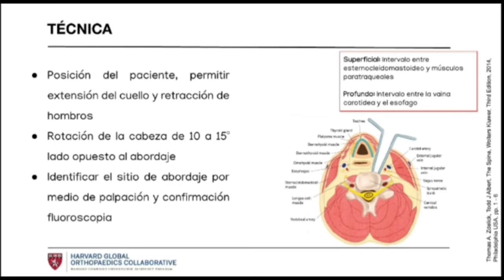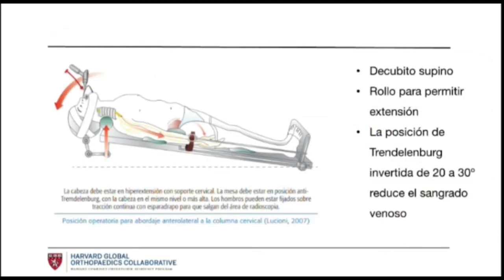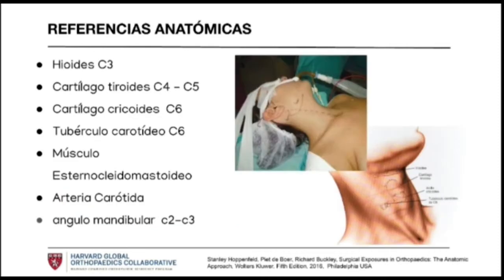Here we see a patient with the neck extended. In patients with unstable spine due to fracture, we must be very careful with this position due to the risk of causing neurological injuries. A roll is placed behind the neck to allow extension and rotation. An inverted Trendelenburg position between 20 and 30 degrees can help reduce bleeding by decreasing venous return. Once we mark our incisions, we must note the anatomical references. We recommend this approach from C2 to T1.